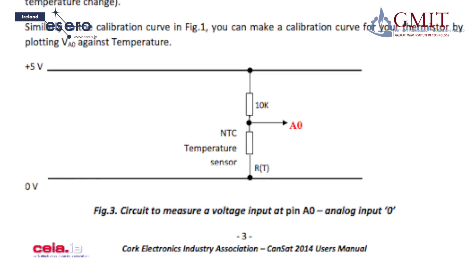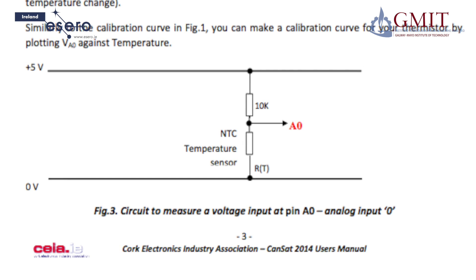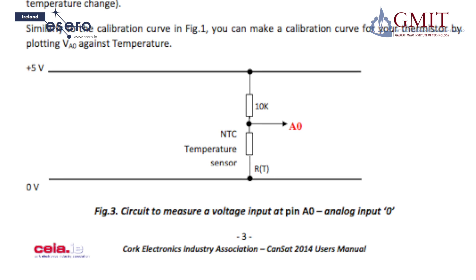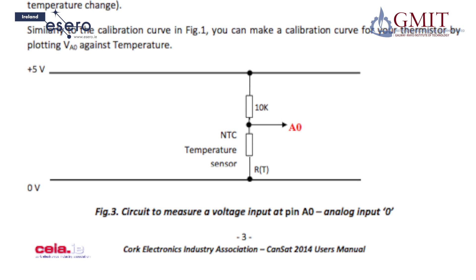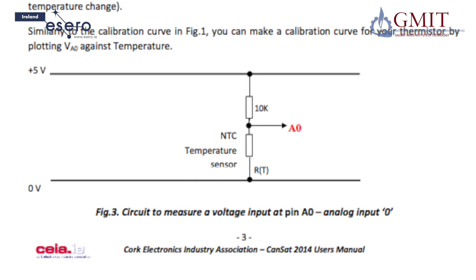Similarly to the calibration curve we've just seen, you can make a calibration curve for your thermistor by plotting V at A0 against temperature.